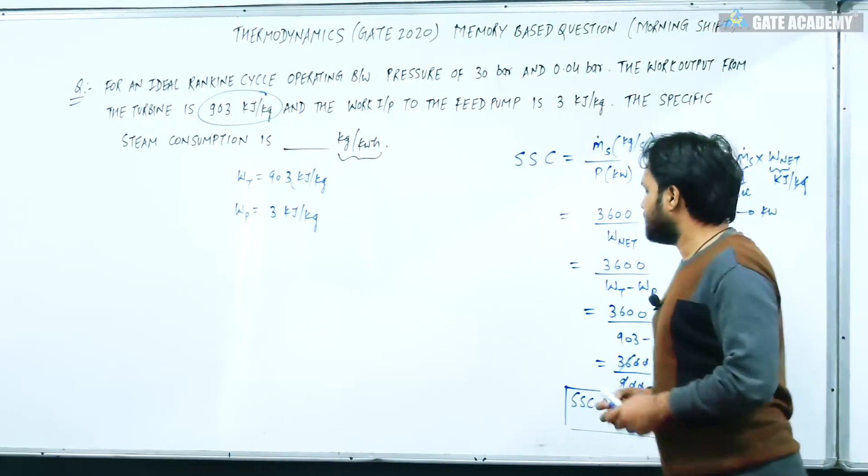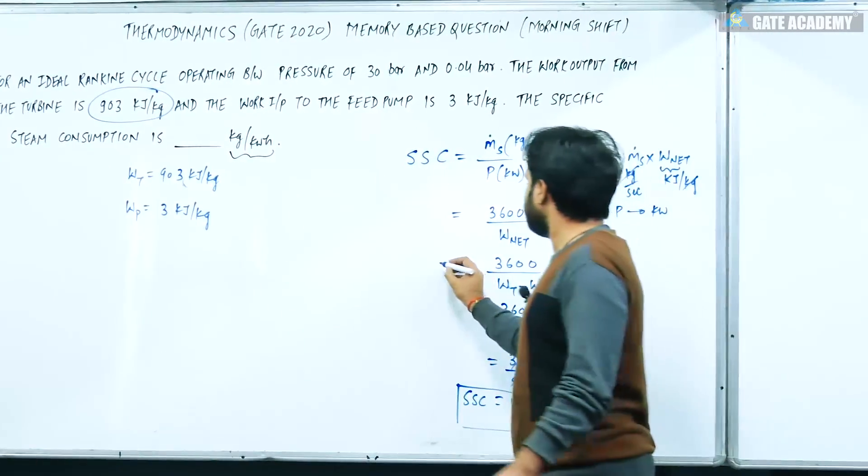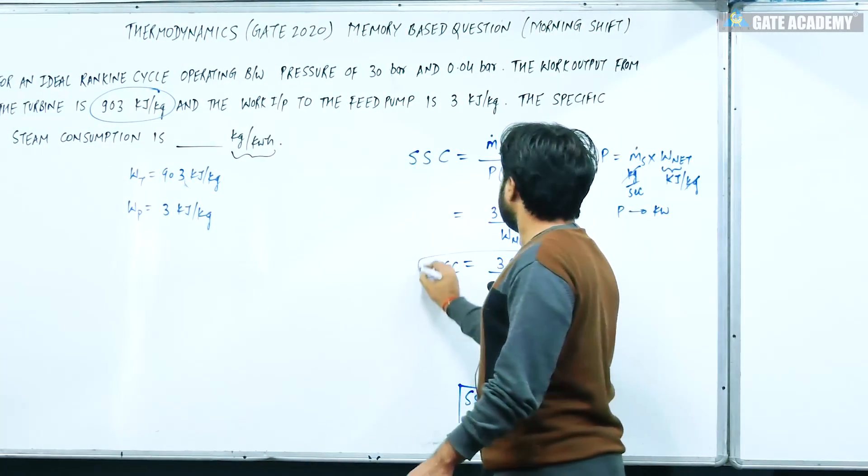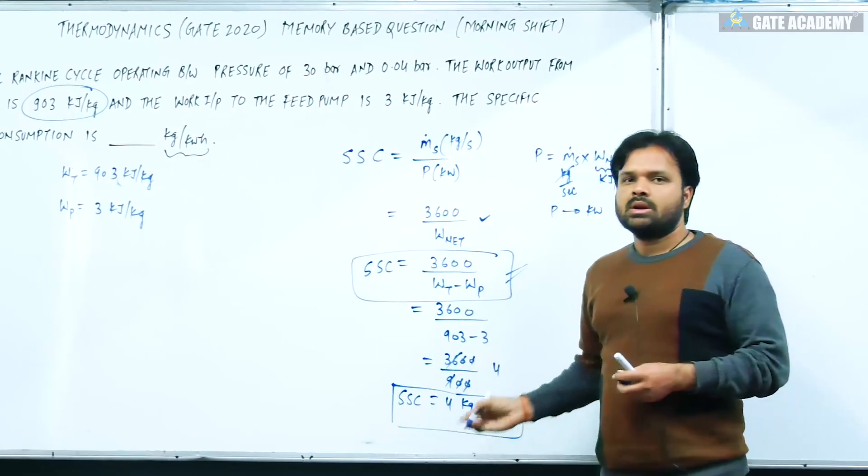So now you can see, again it was an easy question. We can apply this formula directly. This is your direct formula. You will answer 4.